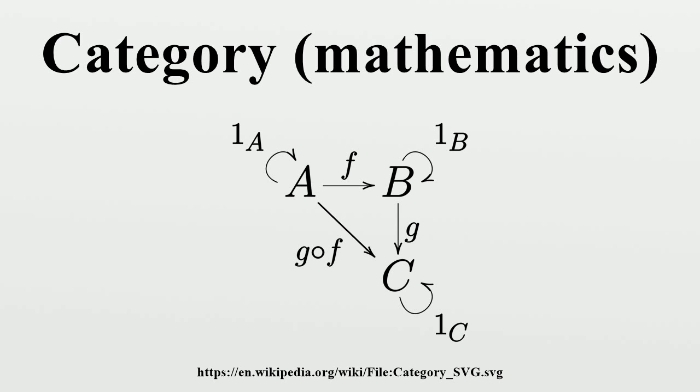such that the following axioms hold: if f: a to b, g: b to c and h: c to d, then h of (g of f) equals (h of g) of f; and for every object x, there exists a morphism 1_x: x to x called the identity morphism for x, such that for every morphism f: a to x and every morphism g: x to b, we have 1_x of f equals f and g of 1_x equals g.